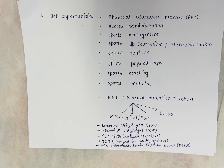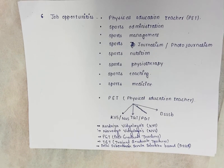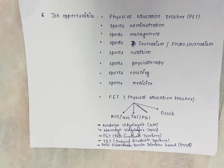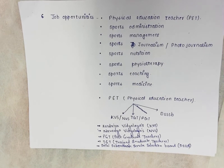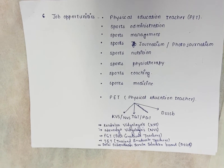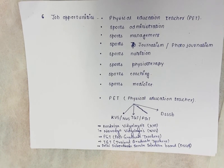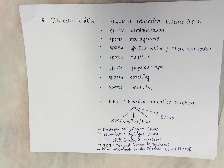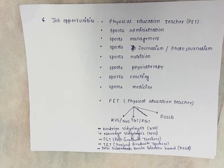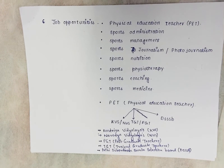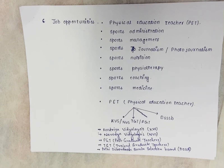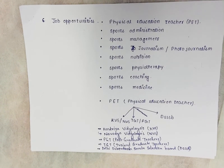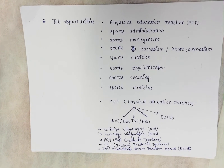PGT stands for Post Graduate Teachers, and TGT stands for Trained Graduate Teachers. DSSB stands for Delhi Subordinate Service Selection Board. We have given you some hints about what is happening and what job opportunities are available.